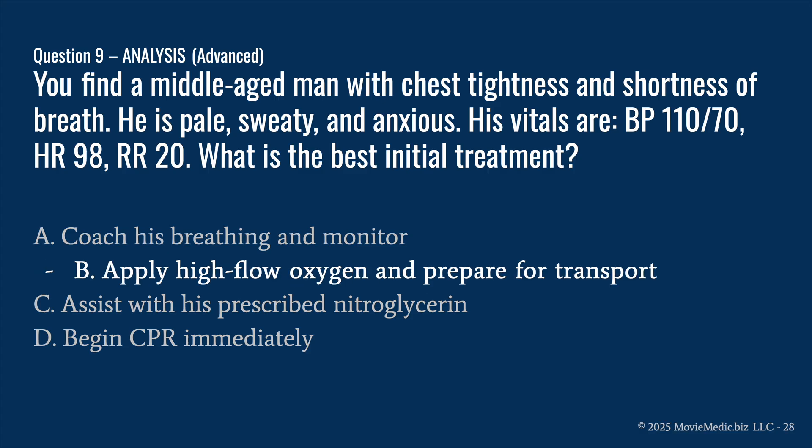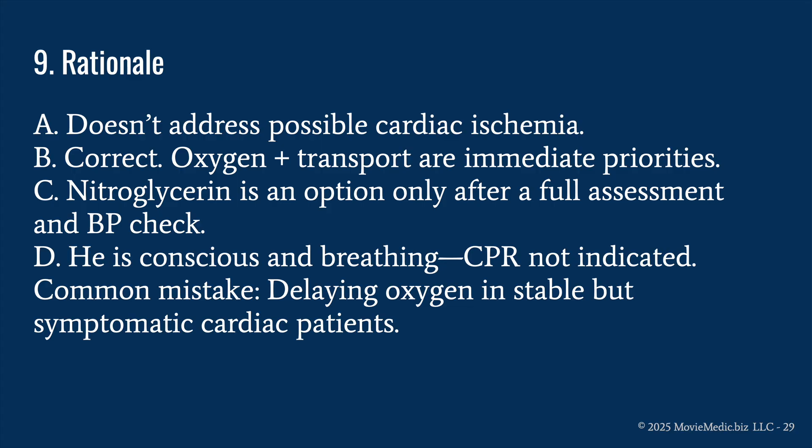The answer is B, apply high flow oxygen and prepare for transport. A doesn't address possible cardiac ischemia. B is correct because oxygen and transport are immediate priorities for this patient. C is wrong because nitroglycerin is only an option after a full assessment and blood pressure check. D is wrong because he is conscious and breathing — CPR is not indicated. The common mistake is delaying oxygen in a stable but symptomatic cardiac patient. For high-likelihood cardiac patients, oxygen and transport.